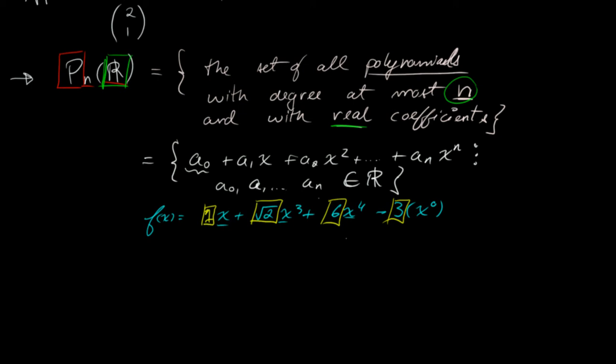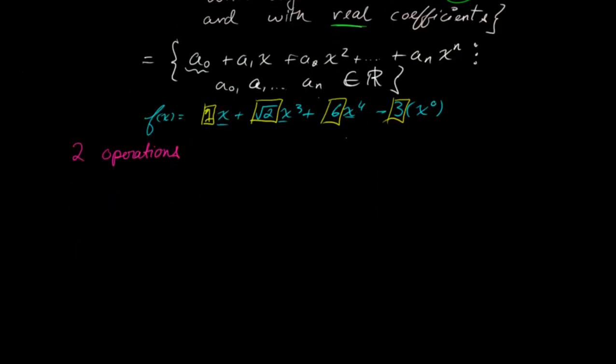So to show that this is actually, oh, and of course, you need to define the two basic operations. So the two operations that we define are vector addition and scalar multiplication. So vector addition is defined really how you might think it would be. So for vector addition, if we have two polynomials, f and g, that belong to P_n(R)...